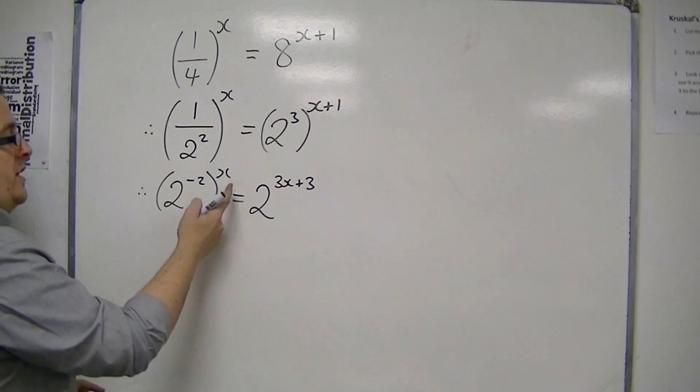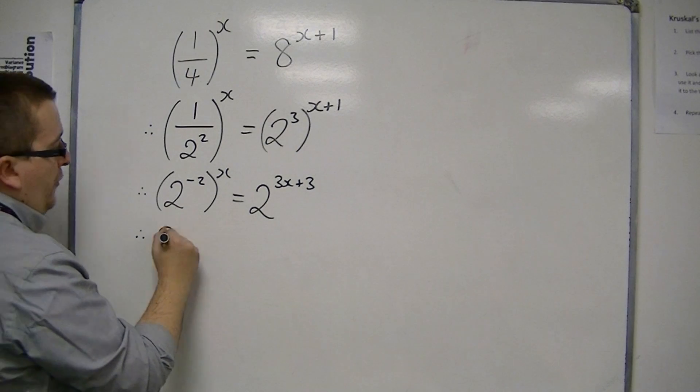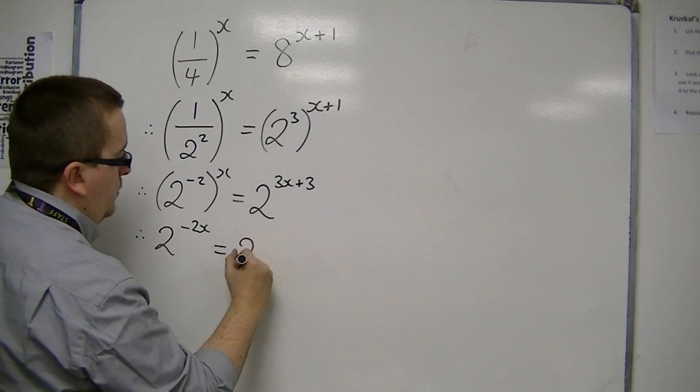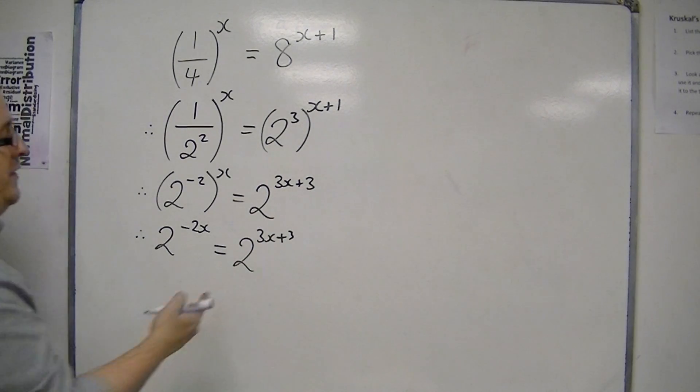Now this little trick, I can do exactly the same here. So I've got 2 to the minus 2x, minus 2 times x, is equal to 2 to the 3x plus 3. So the right-hand sides stay the same.